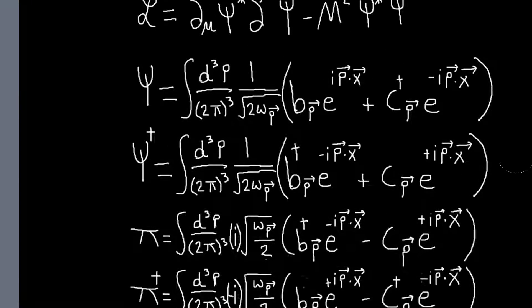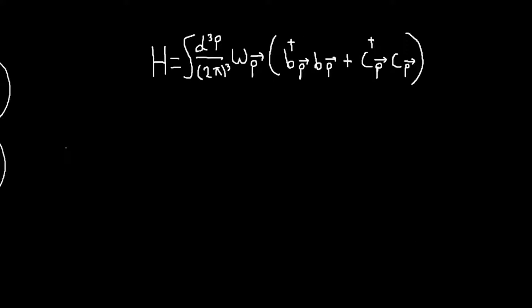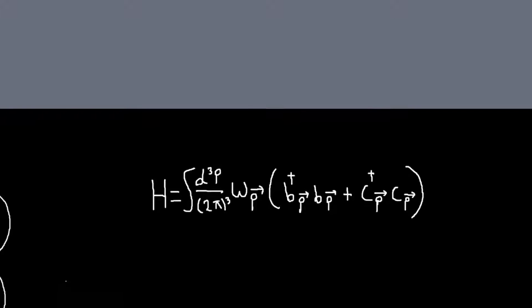And if we do that, what we would find is for the Hamiltonian, once we've normal ordered everything, is this. So it's basically exactly the same as before, only again, we have two particles that we could create, or two particles that we can create instead of just one. So it just looks like the same Hamiltonian as before, only two terms.